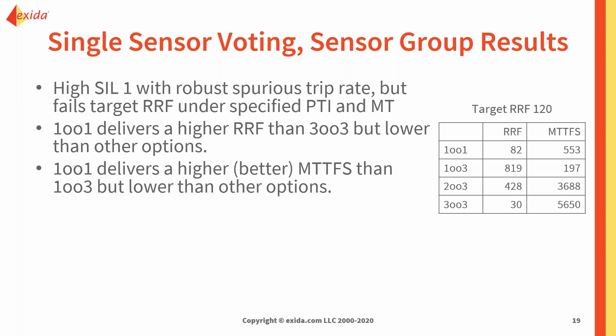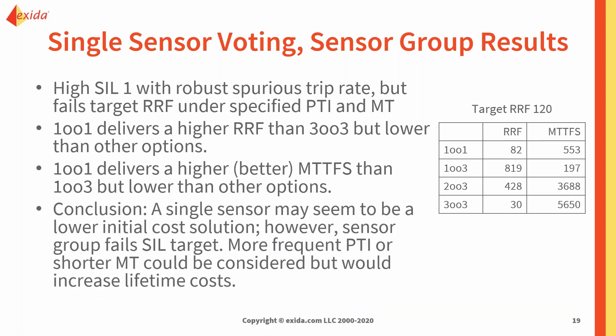Comparing the one out of three and the two out of three: with one out of three, we get the highest risk reduction factor but also the shortest spurious trip times. A single sensor may be an initial lower cost, but by the time we make changes to our process to try and reach our target, we'll probably increase costs elsewhere in the life cycle. So it probably makes more sense to move forward with the redundant sensors — using all three temperature transmitters.